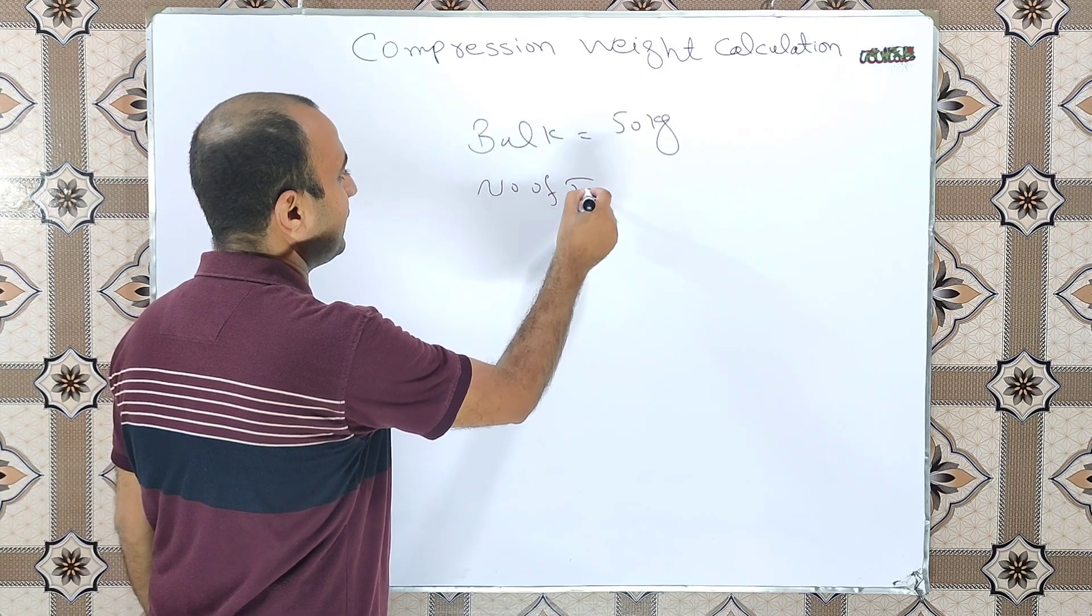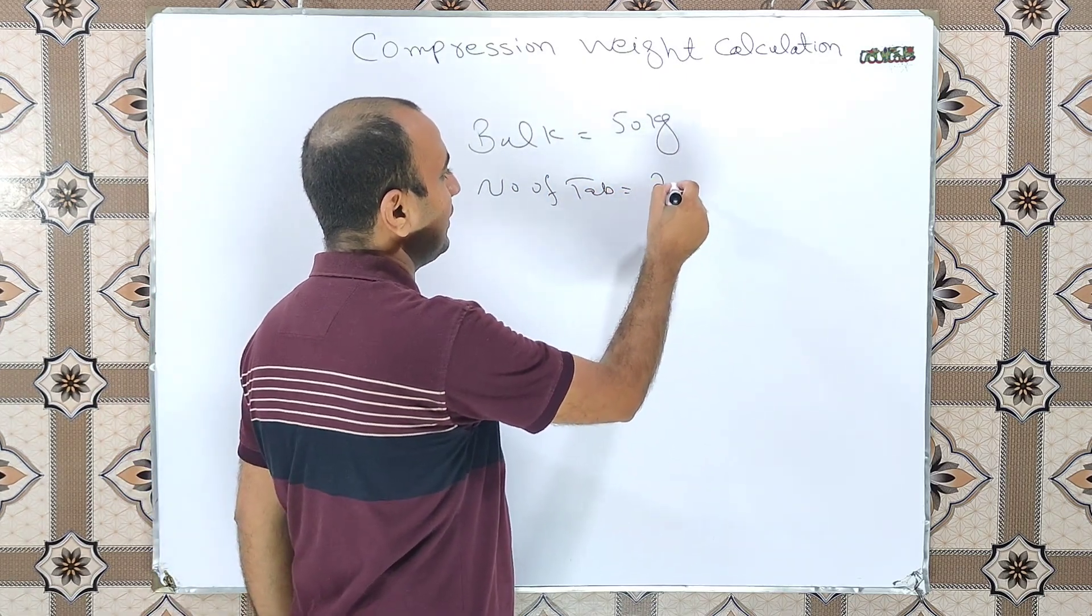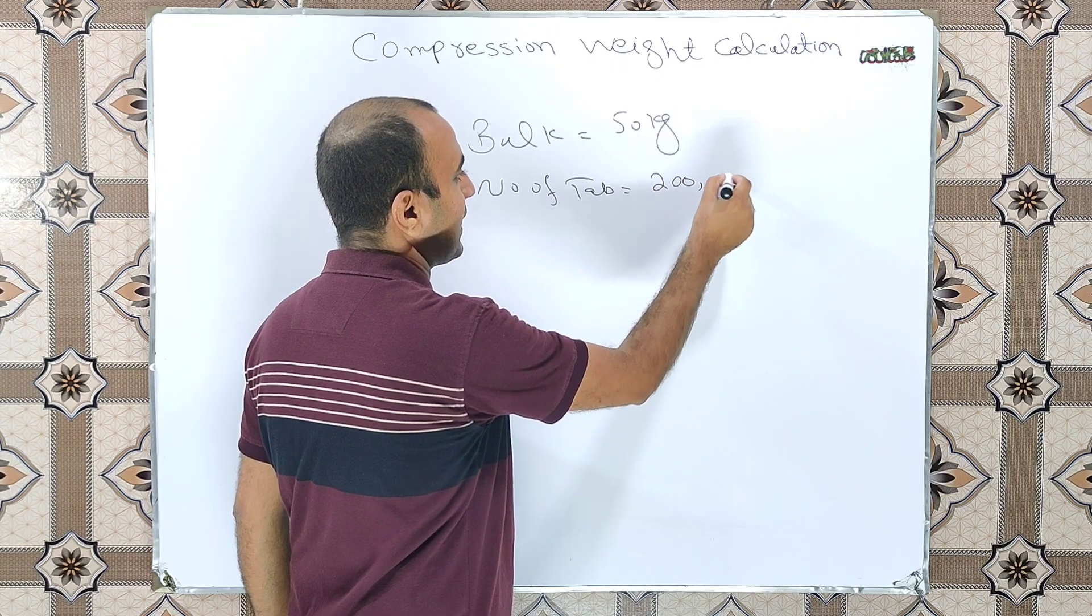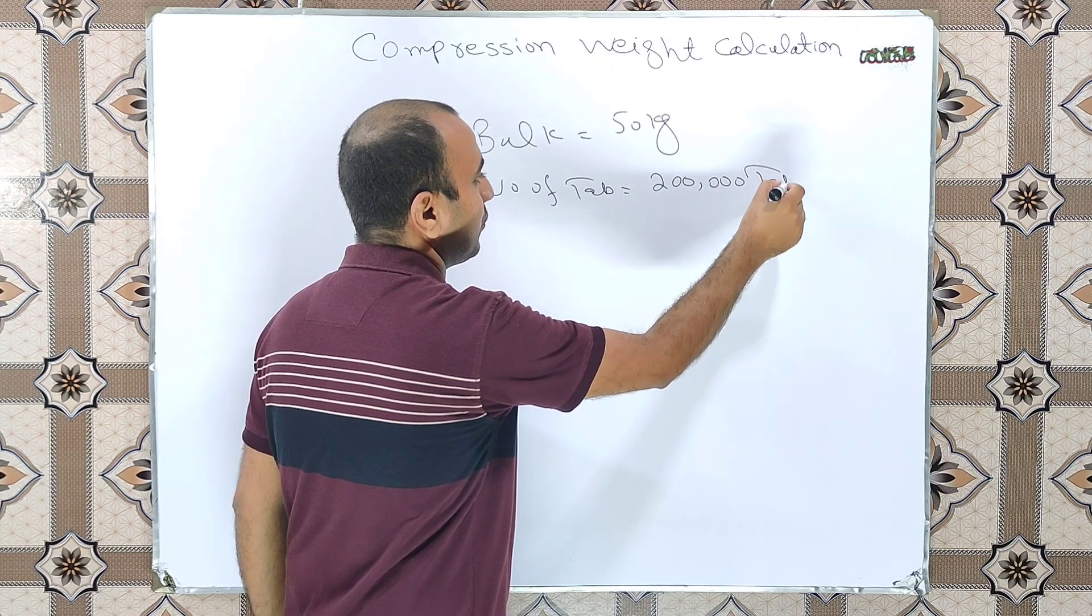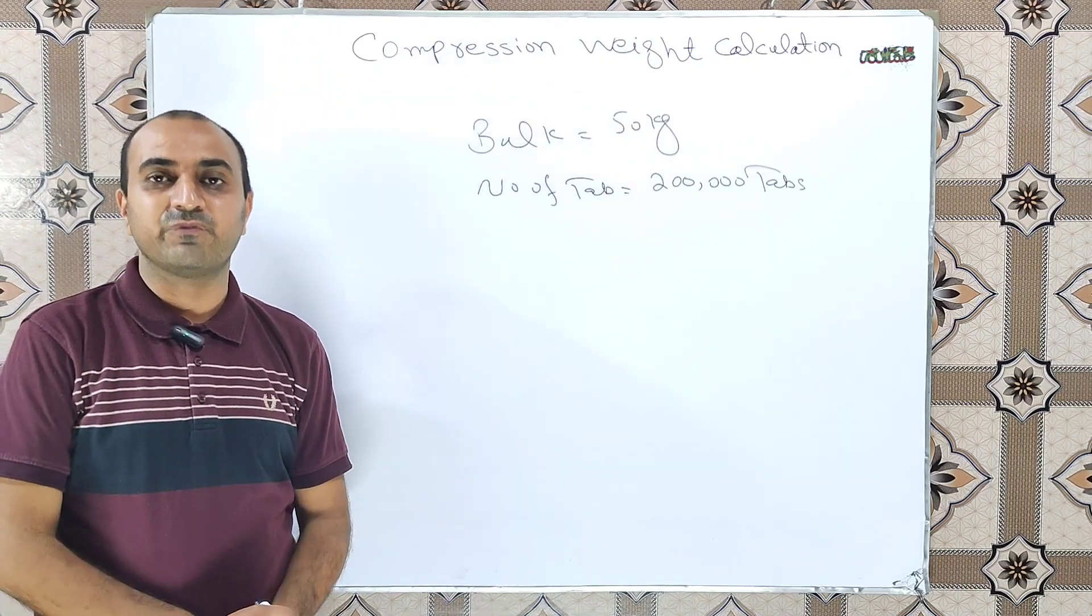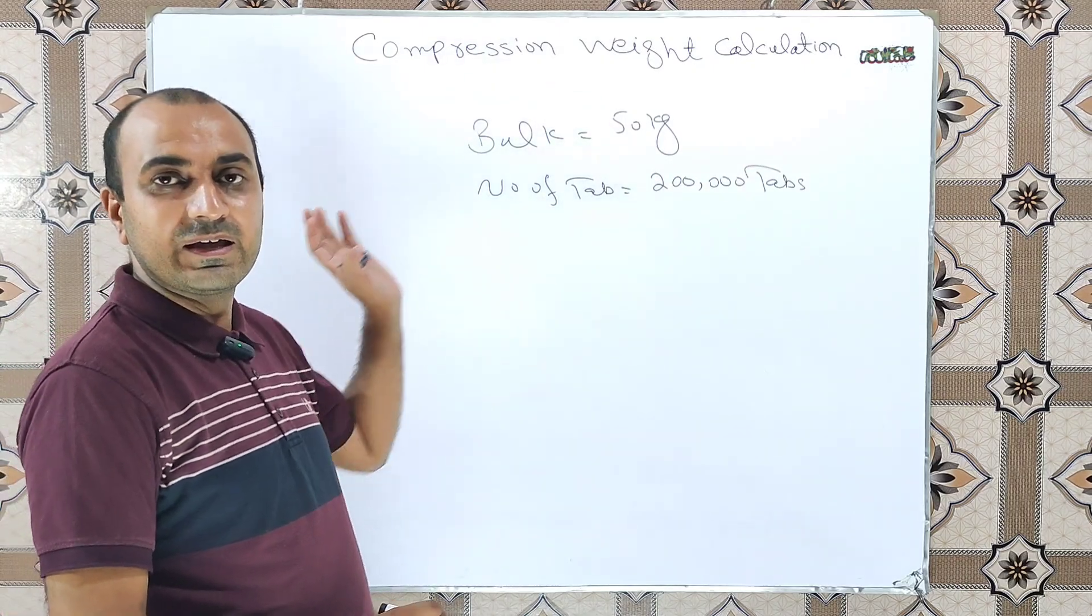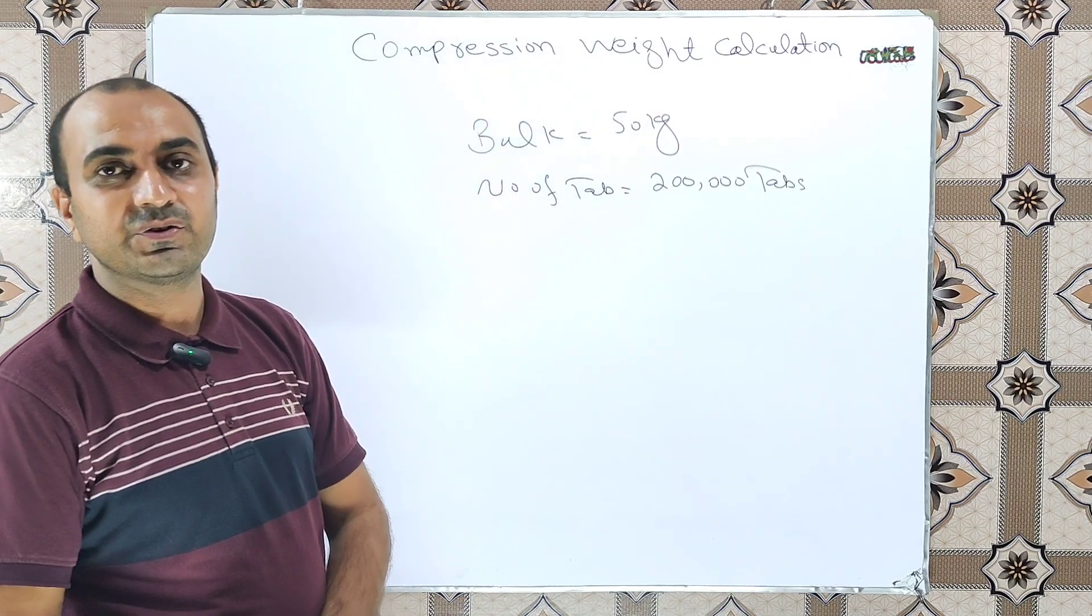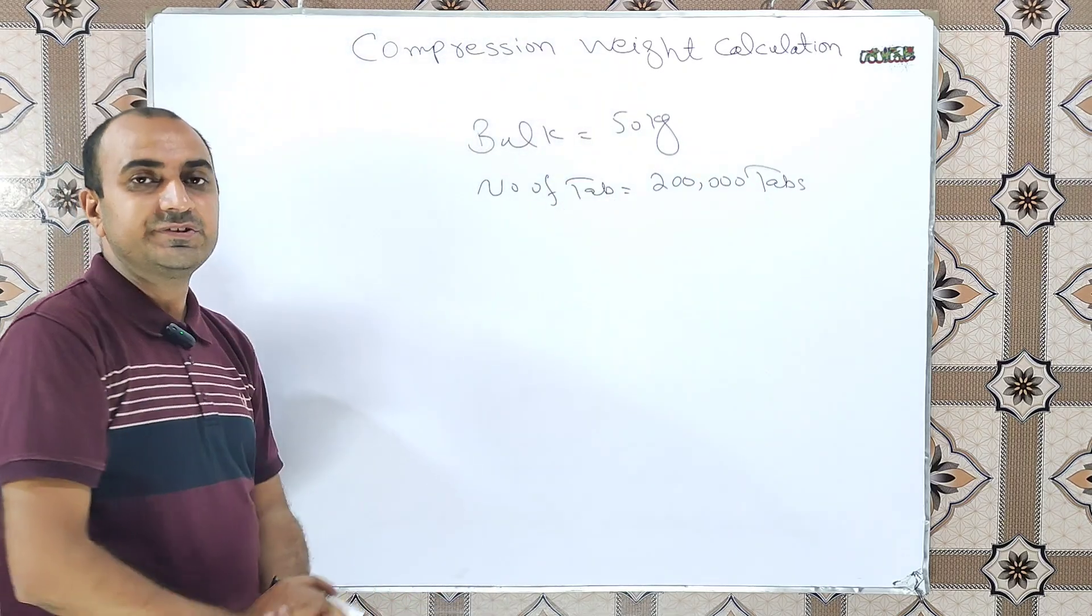meaning the batch size in number of tablets is 2 lakh tablets. So what will be the tablet compression weight? How will we calculate the tablet compression weight from these two values?